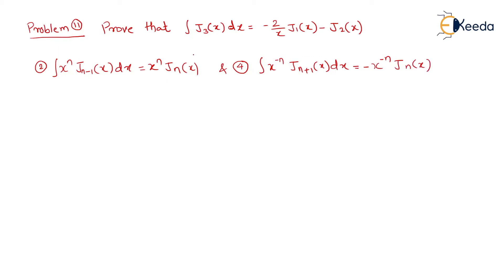Now let us decide which formula will be applicable here. In Formula 2, n minus 1 goes to n — that means going to the future. In Formula 4, n plus 1 goes to n — that means going to the past. If you observe the problem, here it is J3(x) and here it is 1 and 2, meaning 1 and 2 are the past of J3(x). So we want to go to the past, therefore Formula 4 will be applicable.